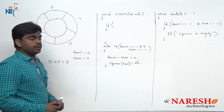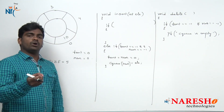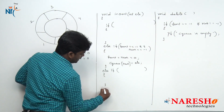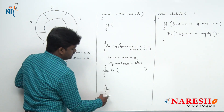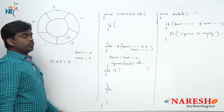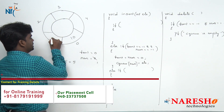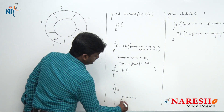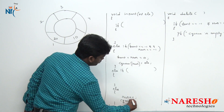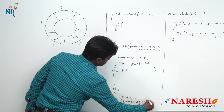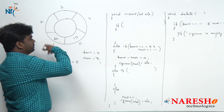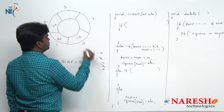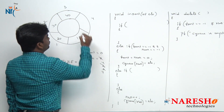So we are storing that element — we are inserting 10. Next, if you want to insert one more element, rear plus plus, rear value becomes 1, and 20 is stored. Then rear plus plus again, rear value 2 stores 30. Next, rear value 3 stores 40. Rear value 4 stores 50. Now the queue is full.